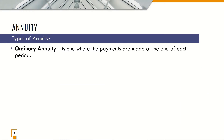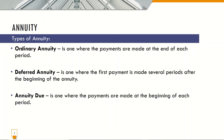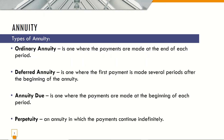The first one is the ordinary annuity, where the payments are made at the end of each period. The second one is the deferred annuity, where the first payment is made several periods after the beginning of the annuity. The next one is the annuity due, where the payments are made at the beginning of each period. And the last one is the perpetuity, which is an annuity in which the payments continue indefinitely.